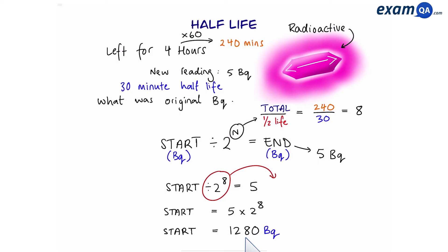So that was how much radiation it had in the beginning before we left it for four hours. So our sample started with 1,280 becquerels, and then four hours later, it dropped to 5 becquerels. Okay, so these two were relatively easy questions. Now we're going to try a harder one.